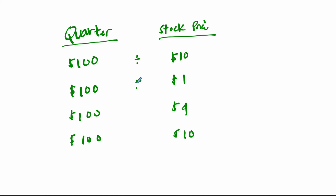So if you looked at the number of shares you're able to buy, you would take the $100 and divide it by the stock price per share. So $100 divided by 10, that means you're able to buy 10 shares. The next quarter, you're able to buy 100.